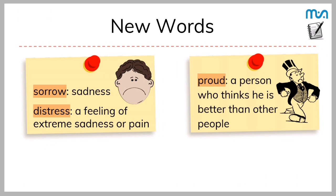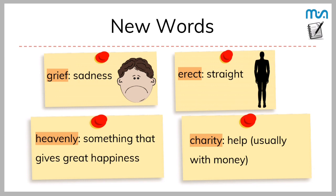Now let us review the new words. Sorrow means sadness. Distress means a feeling of extreme sadness or pain. Proud means a person who thinks he is better than other people. Grief also means sadness. Erect means straight — stood erect means to stand straight. Heavenly means something that gives great happiness. Charity means help, usually with money.